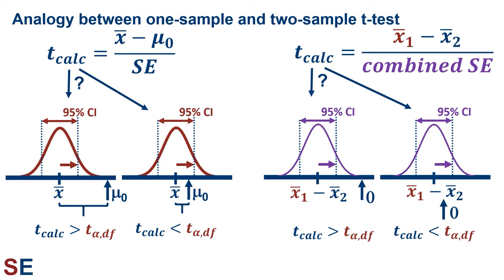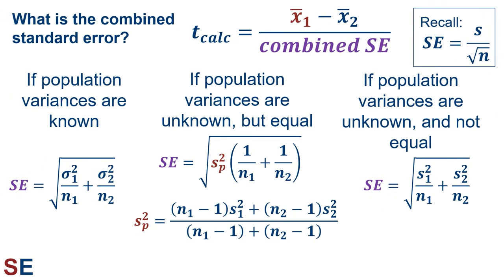How we get the combined standard error can depend on what type of data we're working with, and there are four different types of tests to think about. The first scenario is when our population variances are known. In this situation, the standard error is the square root of the variance of population 1 divided by the sample size of the sample from population 1, plus the variance of population 2 divided by the sample size of the sample from population 2. This is actually a very unrealistic situation, because how would we know the variance of the populations without knowing their means? But if this is the case, we could use a normal distribution instead of the t-distribution to create the confidence interval.